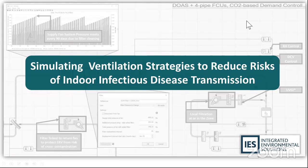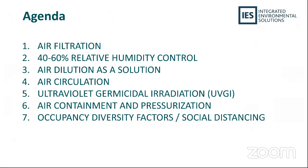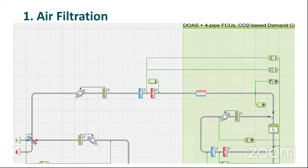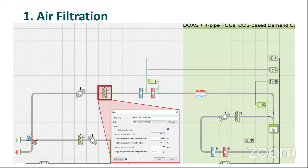As building design and HVAC system operation continues to react to the virus responsible for the COVID-19 pandemic, there's been an increased focus on the simulation of ventilation strategies that can reduce the risk of transmission of infectious diseases. My slides today will highlight seven of the most common ventilation system strategies being simulated by practitioners in 2020. Number one is air filtration. Aside from filtering viruses and bacteria, many of us on the West Coast have been filtering carbon in the air.